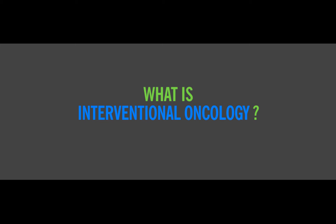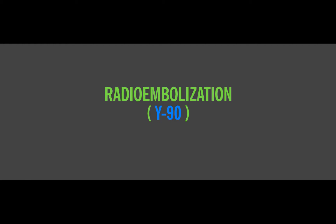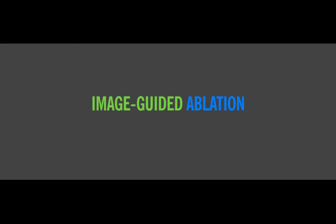In discrete terms, interventional oncology boils down to three types of procedures which we routinely perform as interventional radiologists. The three are trans-arterial chemoembolization of liver tumors, also abbreviated TACE; radioembolization of liver tumors, also known as Y90; and image-guided ablation of tumors in solid organs, namely the liver and kidney.